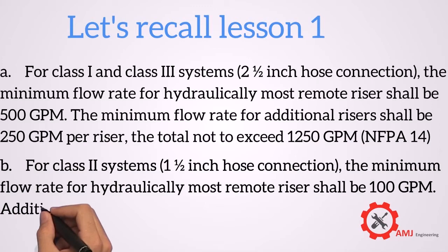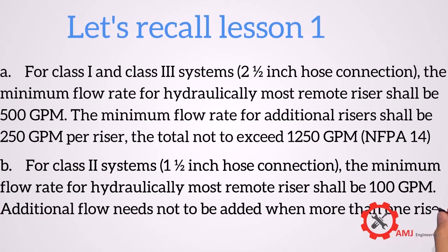Second, for class 2 systems, the required flow is 100 GPM, no matter how many risers we have.